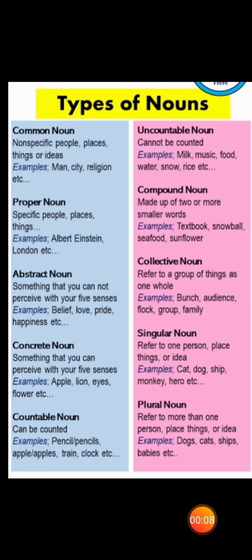A noun is the name of a person, place, things, animal or human quality. Now we will talk of different types of noun.